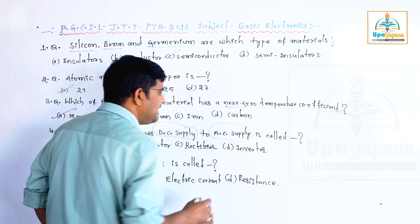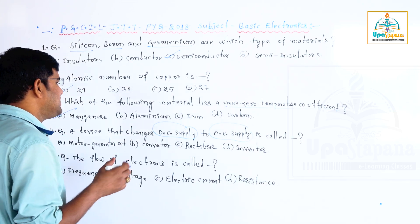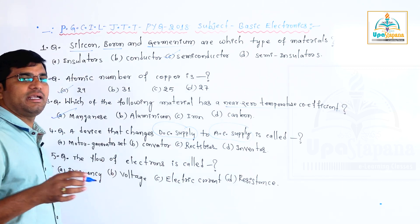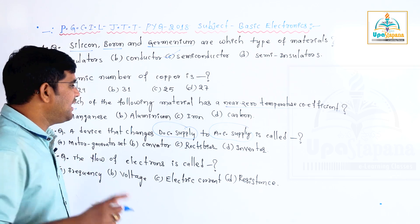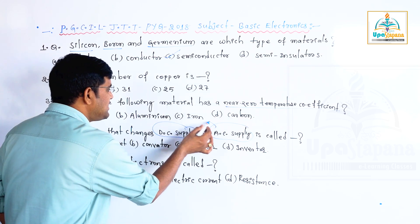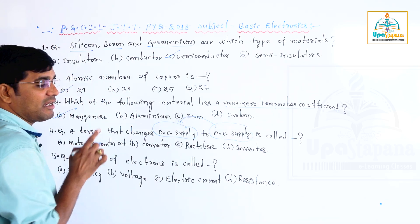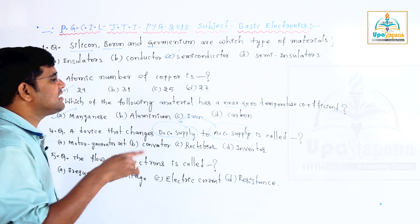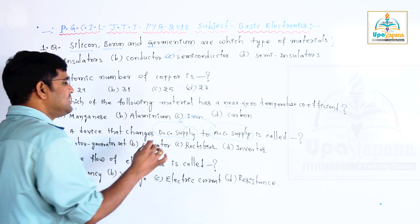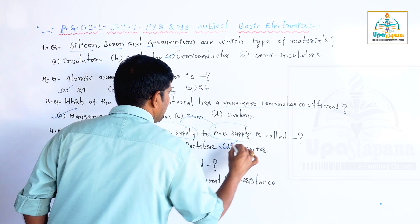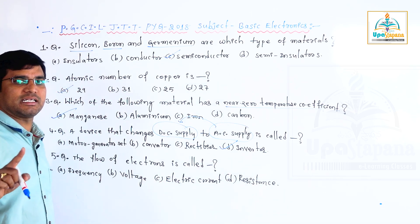To convert DC supply to DC supply, we call it a converter. DC supply to AC supply — we call it an inverter. AC to DC is a rectifier.